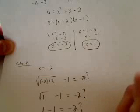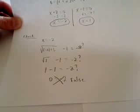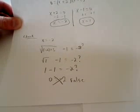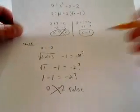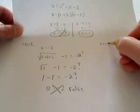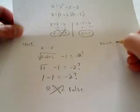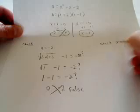So that's false. So that is not true. And therefore, we have to toss out x equals negative 2. That's not the correct answer. But let's check the other one. Let's check when x is equal to positive 1.